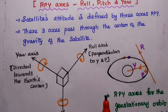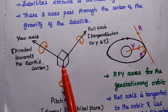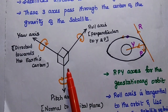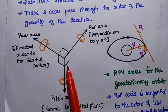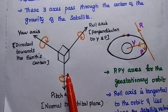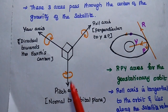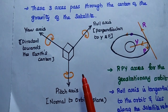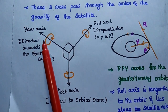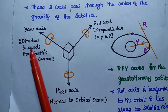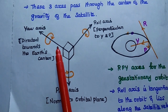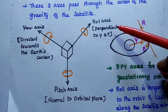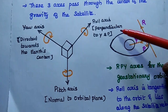These 3 axes pass through the center of gravity of the satellite. The pitch axis is normal to the orbital plane. The yaw (Y) axis is directed towards the earth's center. The roll axis is perpendicular to both the yaw and pitch axes.